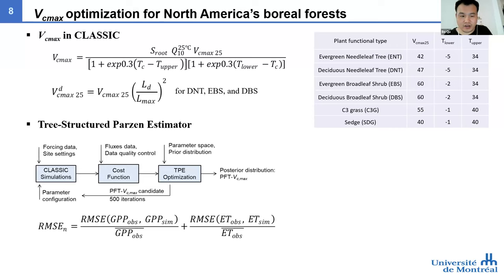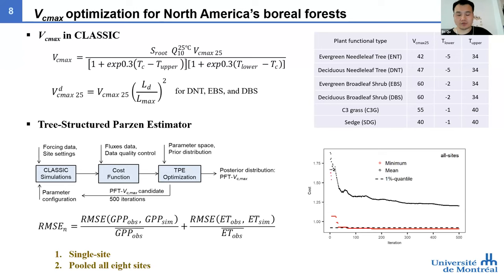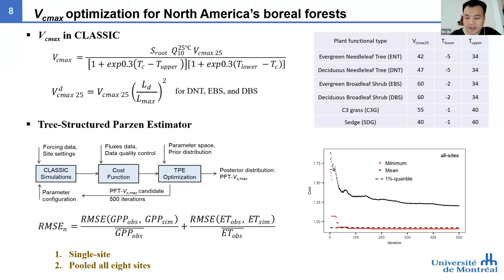We use a Bayesian algorithm — specifically the tree-structured Parzen estimator — to optimize the key parameters for the model. We use GPP and evapotranspiration in the cost function to tune the parameters, running the optimization at individual sites and then pooling all sites together. The right figure shows that the tree-structured Parzen estimator is a very efficient parameter optimization algorithm. For each site, I ran only 500 iterations and convergence was found by about 100 to 200 iterations.